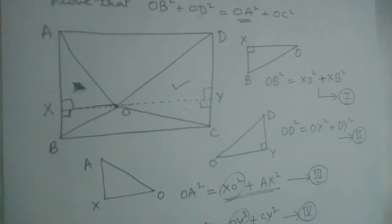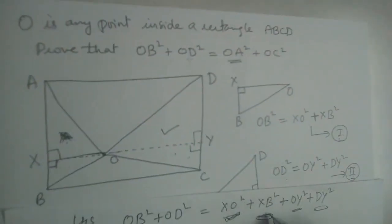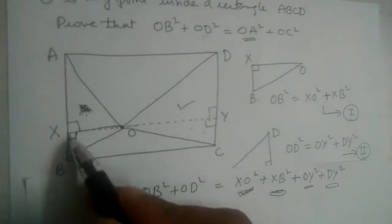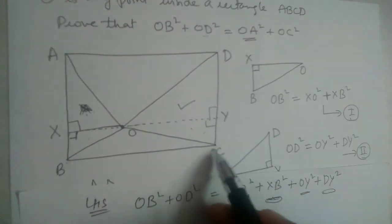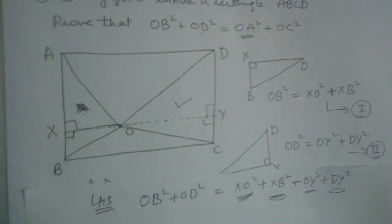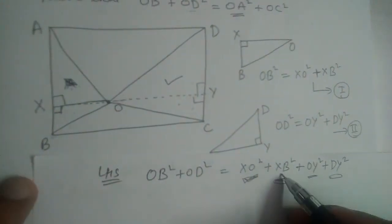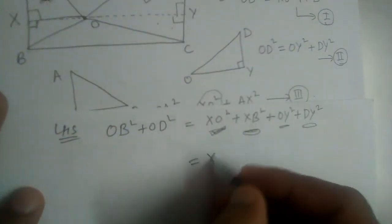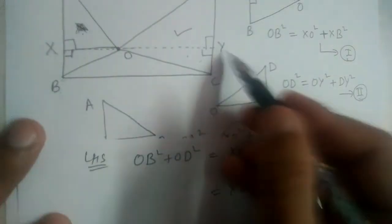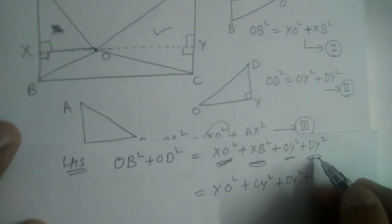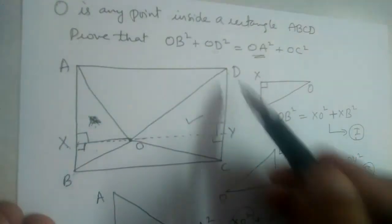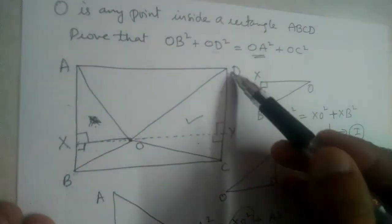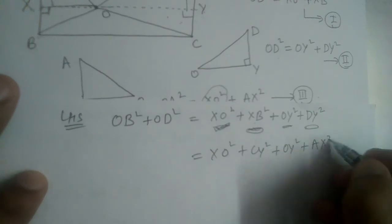In place of XB, can we write CY? Yes, because XBCY will also be a rectangle, so opposite sides are equal. So in place of XB let us write CY: XO² + CY² + OY². Now, in place of DY², we need to write AX², because ADYX is a rectangle so DY equals AX. So in place of DY we write AX: it becomes AX².